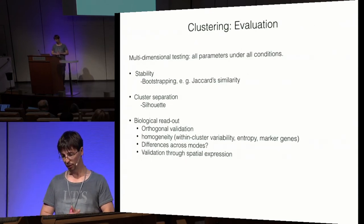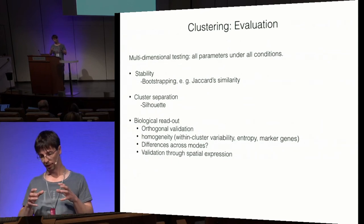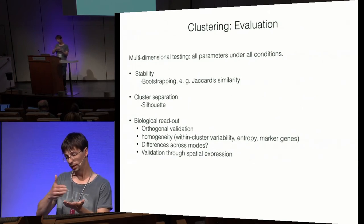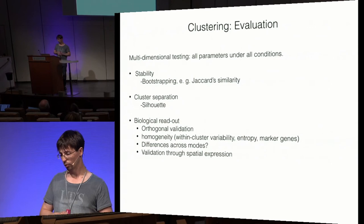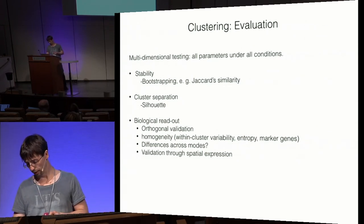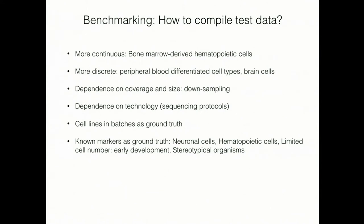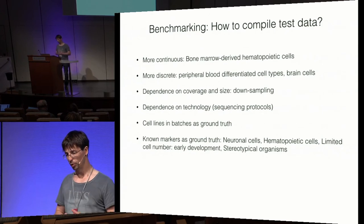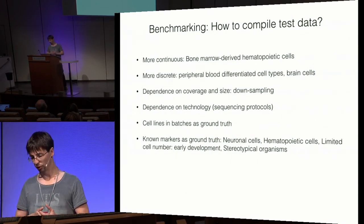To evaluate methods, we can look at clear-cut criteria: cluster stability, cluster separation, and biological readout — we want homogenous clusters with little inter-cluster variability. We need to define a test matrix and compile test data sets. We need both more continuous data sets with gradual changes between cell types and more discrete data sets. Representative data sets are available but probably not sufficient in volume.